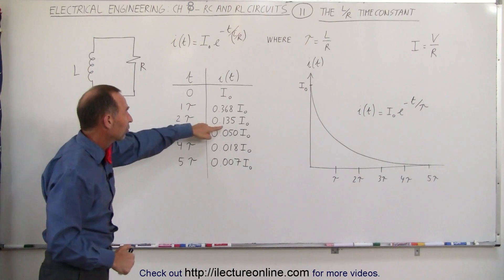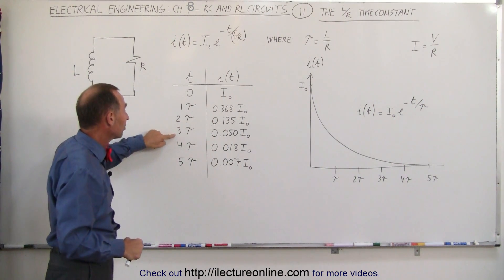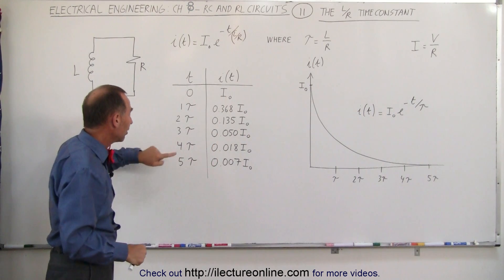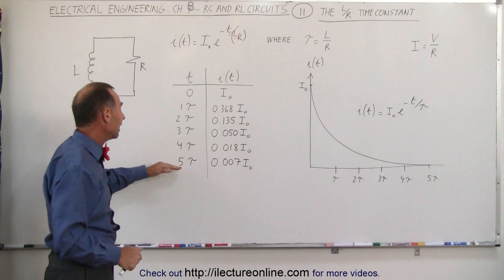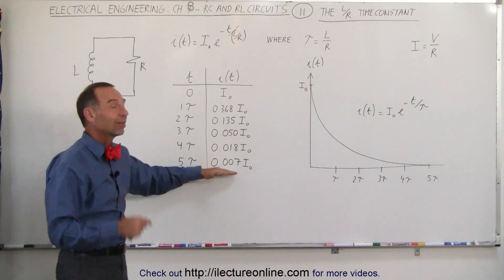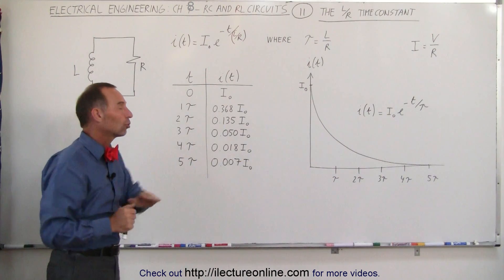After three time constants, it's down to 5%. Four time constants, it's 1.8% of its initial value. And after five time constants, you're down to less than 1%, about 0.7% of the initial current in the circuit.